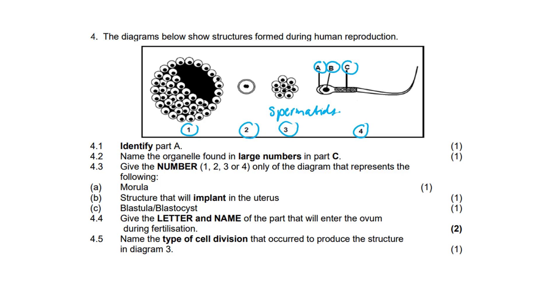Identify part A - we've got an acrosome. 5.2: Name the organelle here - it's the powerhouse of the cell, the mitochondria. 4.3: Give the numbers for the morula - that's going to be within stage three. The structure that will implant in the uterus - stage one. The blastula or blastocyst - also stage one. 4.4: Give the letter and name of the part that will enter the ovum during fertilization. That's going to be B, the haploid nucleus.